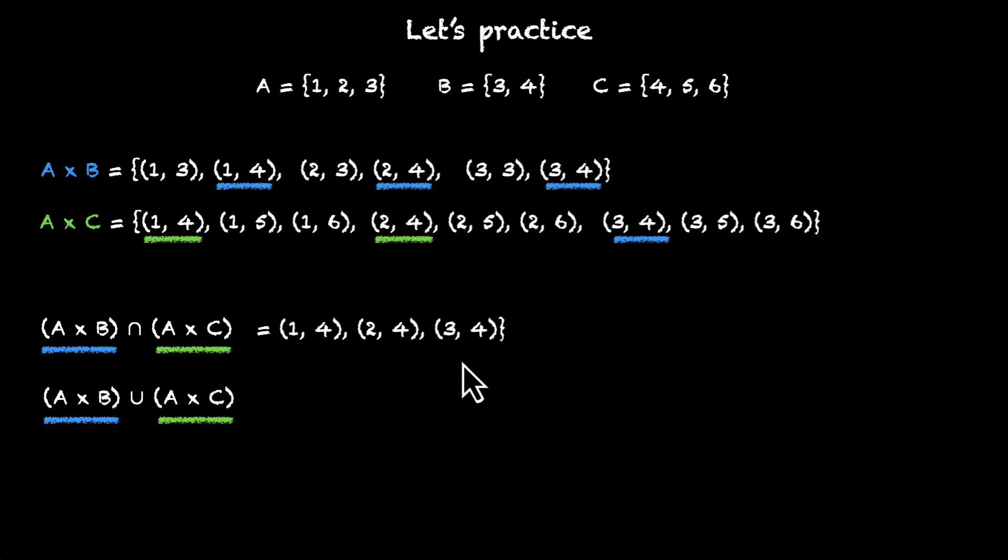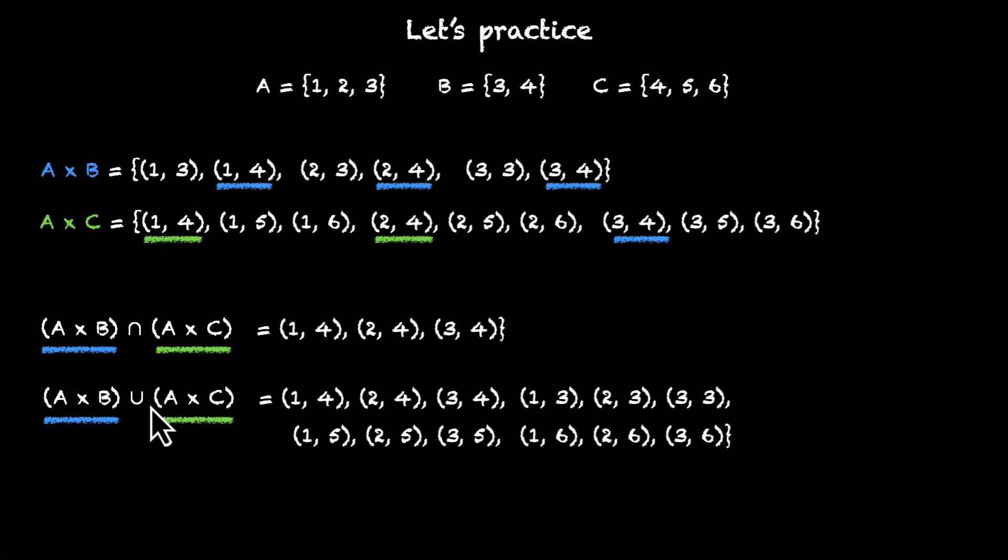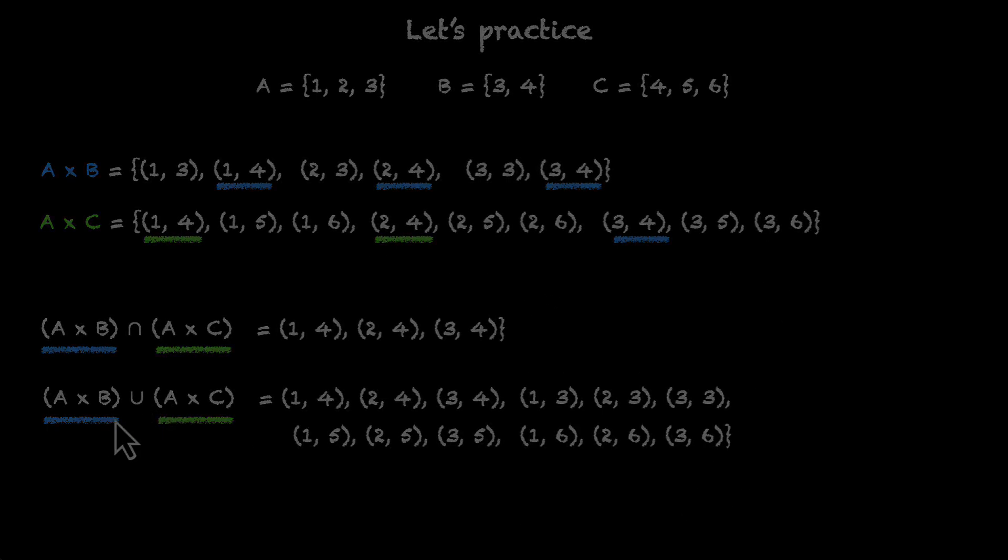Now for the union, let's take these three first: (1,4), (2,4), (3,4), and pick whatever's left. We have (1,3), (2,3), (3,3), then (1,5), (2,5), (3,5), and finally (1,6), (2,6), and (3,6). This is our union of these two Cartesian products.